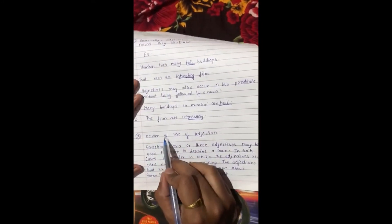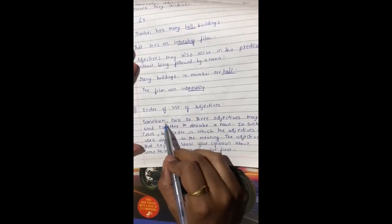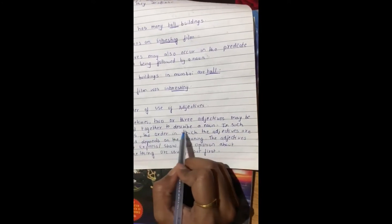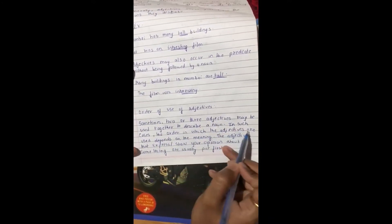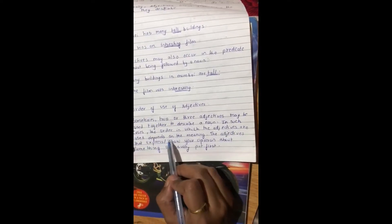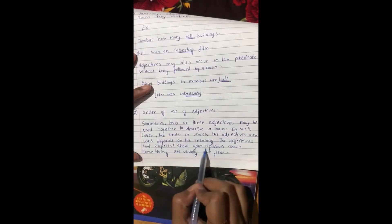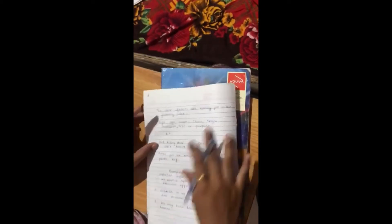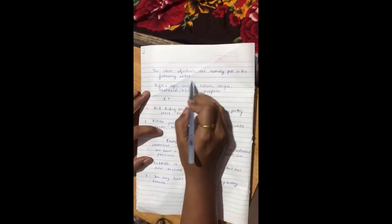Third rule is order of use of adjectives. Sometimes, two or three adjectives may be used together to describe a noun. In such cases, the order in which the adjectives are used depends on the meaning. The adjectives that express your opinion about something are usually put first. The other adjectives are normally put in the following order.